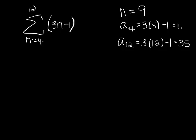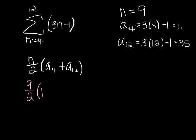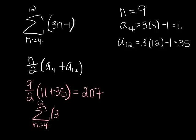Now I'm ready to plug into my formula. n in this case is 9. So I get 9 over 2 times 11 plus 35. That is going to give me 207. So the sum here is 207.